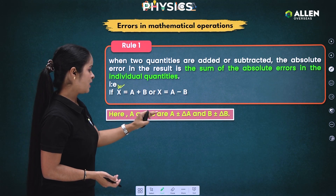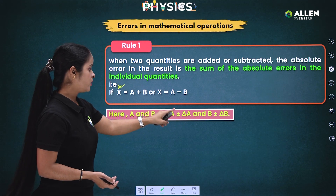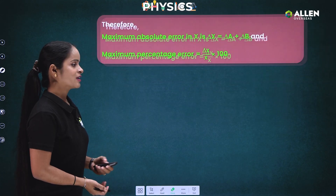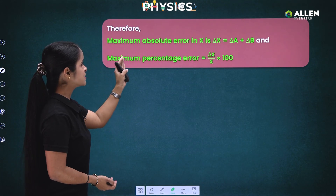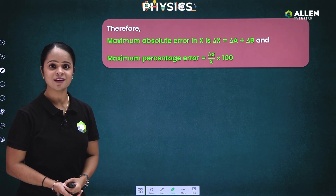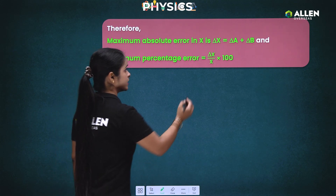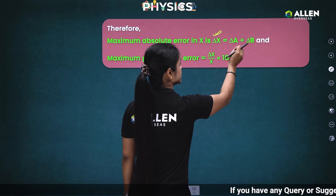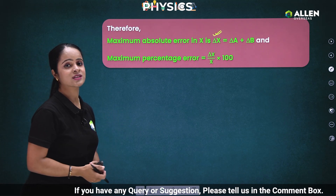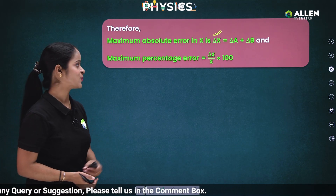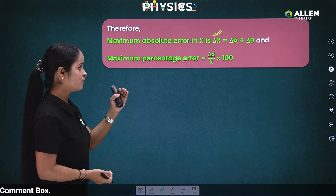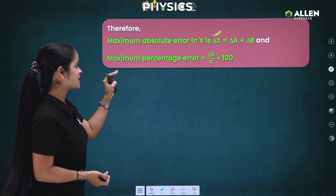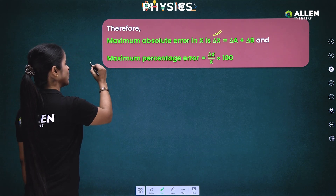Here A and B are written as A plus-or-minus delta A, where delta A is the error in A, and delta B is the error in B. The maximum absolute error in X is represented by delta X, where delta X equals delta A plus delta B — the sum of the errors in individual quantities. The maximum percentage error in X is then delta X upon X, multiplied by 100.